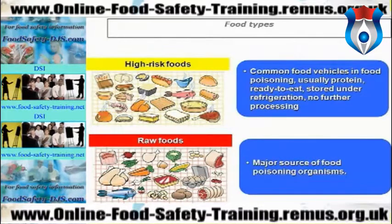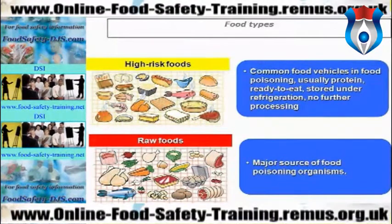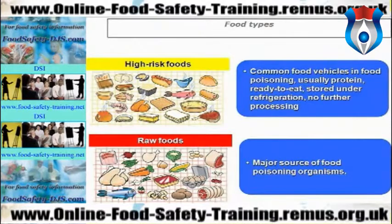High-risk foods are usually protein-rich, ready to eat, stored under refrigeration, and no further processing is required — so you can eat them as they are. Raw foods are a major source of food poisoning organisms.